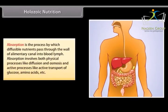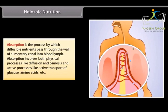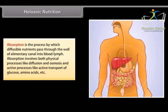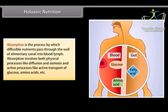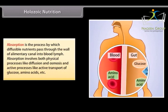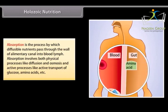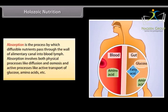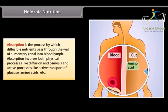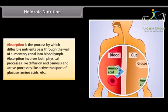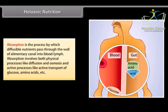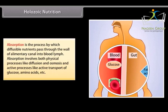Absorption is the process by which diffusible nutrients pass through the wall of the alimentary canal into blood and lymph. Absorption involves both physical processes like diffusion and osmosis, and active processes like active transport of glucose, amino acids, etc.